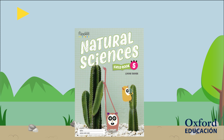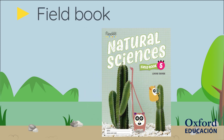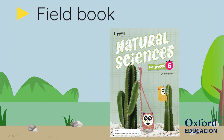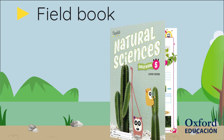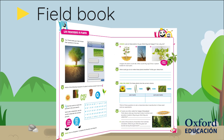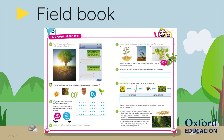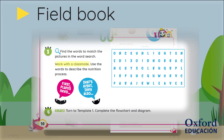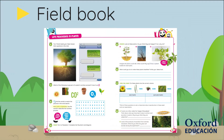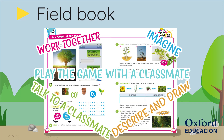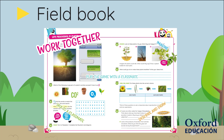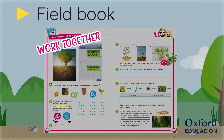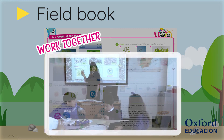After completing their digital lesson, learners use the Oxford Flipped field book in class. Each digital lesson has a corresponding double page spread in the field book. The Oxford Flipped field book includes a wide variety of fun activities with a strong emphasis on group work.